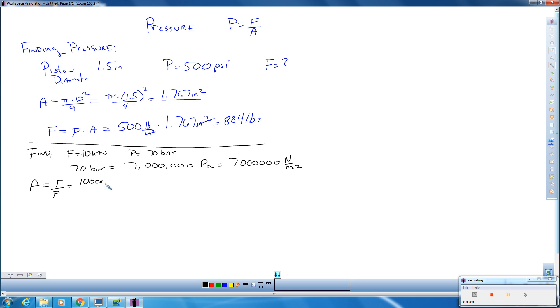So this is 10,000 newtons divided by 7 million newton meters squared. It's always important to pay attention to units because units will cancel. So this ends up giving us 0.001429 m squared.